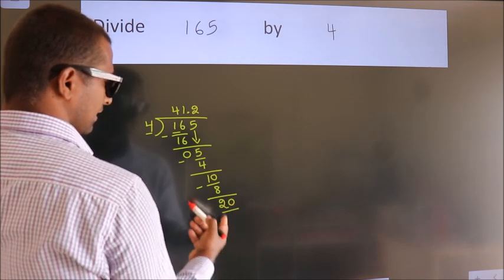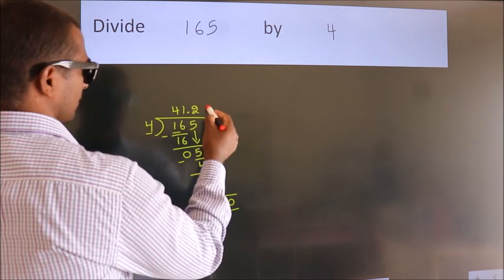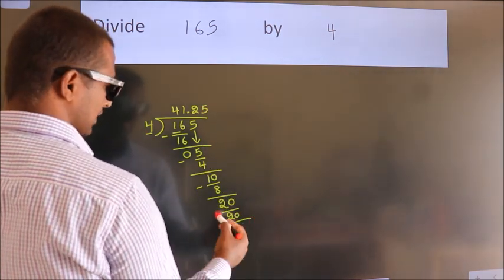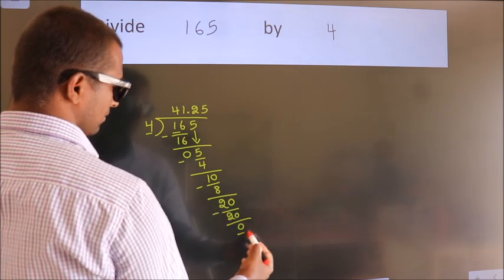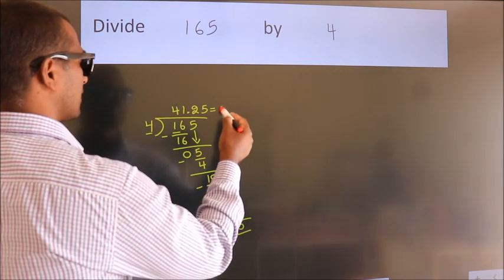So 20. When do we get 20 in the 4 table? 4 times 5 is 20. Now we subtract, we get 0. We got remainder 0, so this is our quotient.